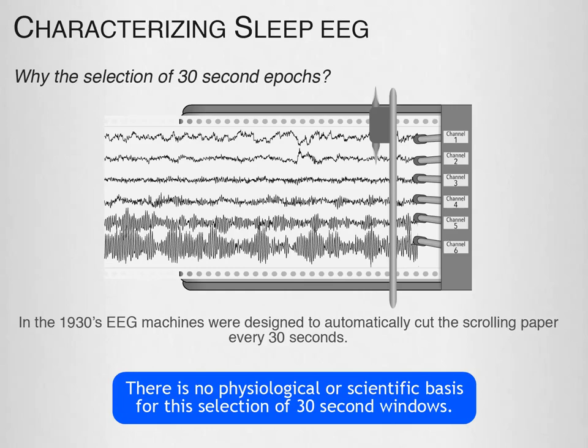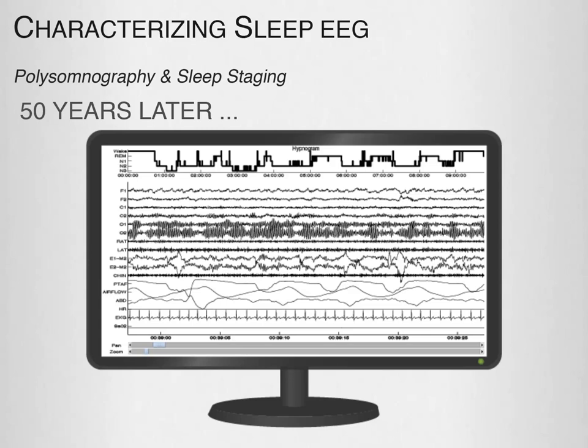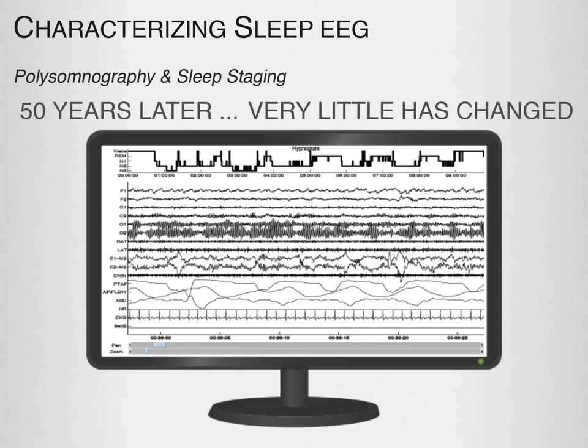Nearly 50 years later, what has changed? Now, instead of the specialized machine, we look at the computer equivalent, and instead of paper with 30 seconds of data, we look at 30-second windows on a computer screen. Overall, very little has changed — we are essentially using the same process developed in the 1960s.